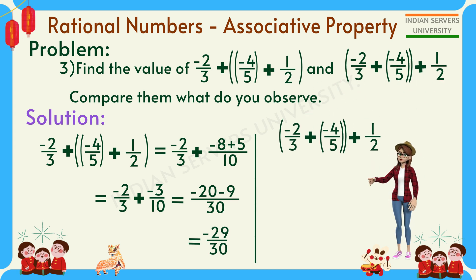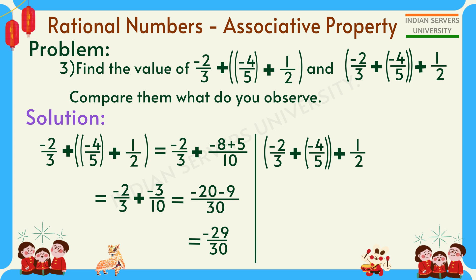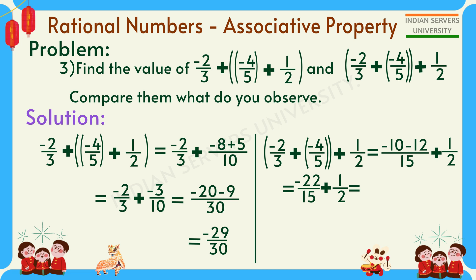For the second grouping, solve -2/3 + (-4/5) first: 5 × (-2) = -10, 3 × (-4) = -12, denominator 3 × 5 = 15. So -22/15 + 1/2. Solving: 2 × (-22) = -44, 15 × 1 = 15, denominator 15 × 2 = 30. This gives -29/30. Both are equal.